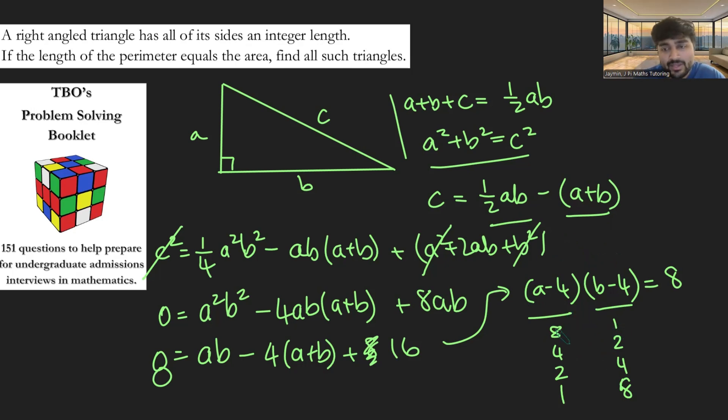We can just have a look at each of these. So if A minus 4 is 8, we get A equals 12, and B will then equal 5. If A minus 4 is 4, we're going to get A equals 8, and B equals 6.